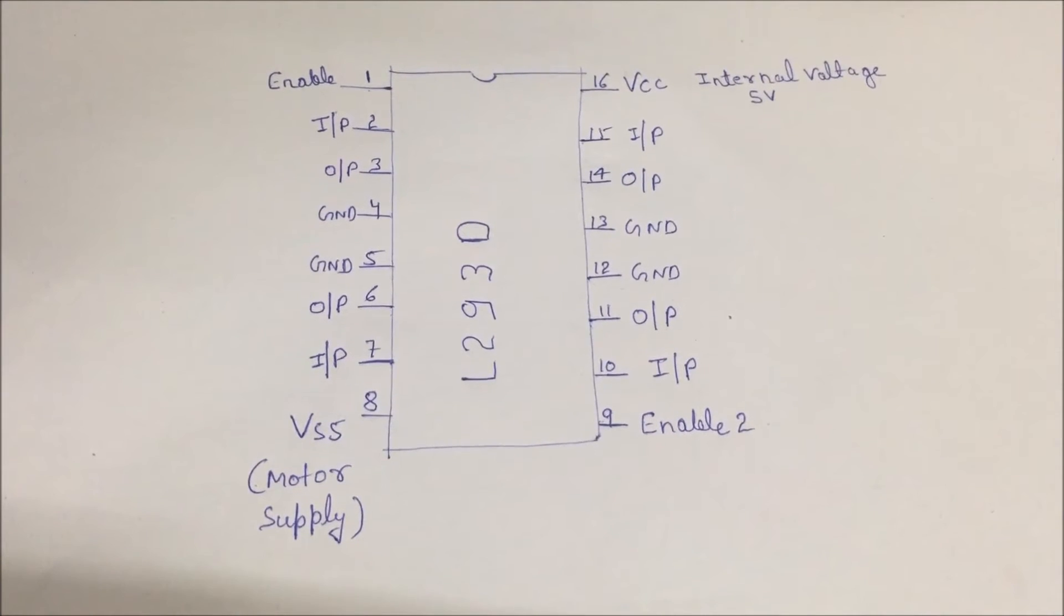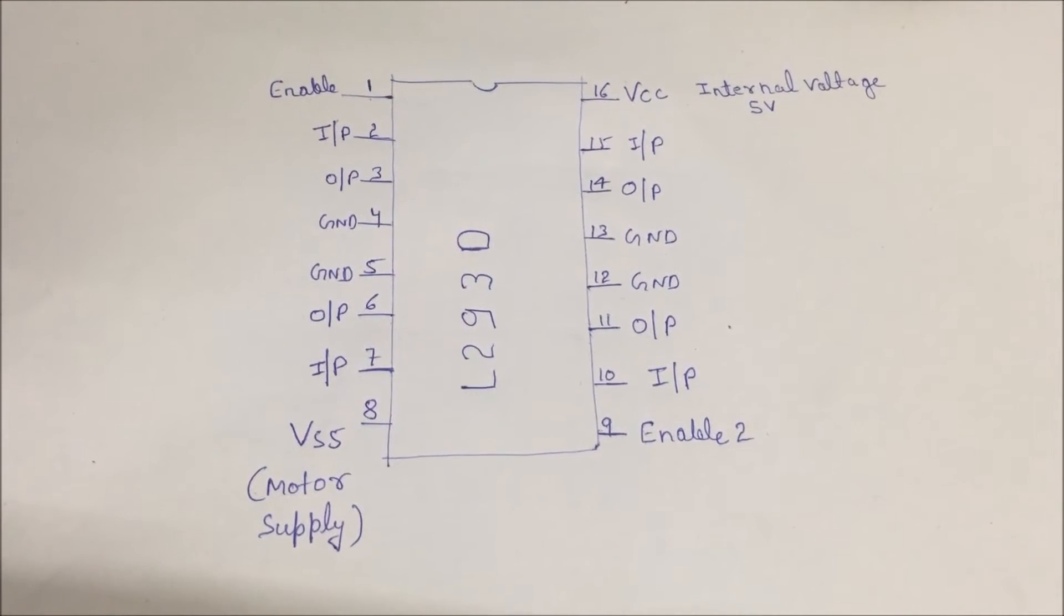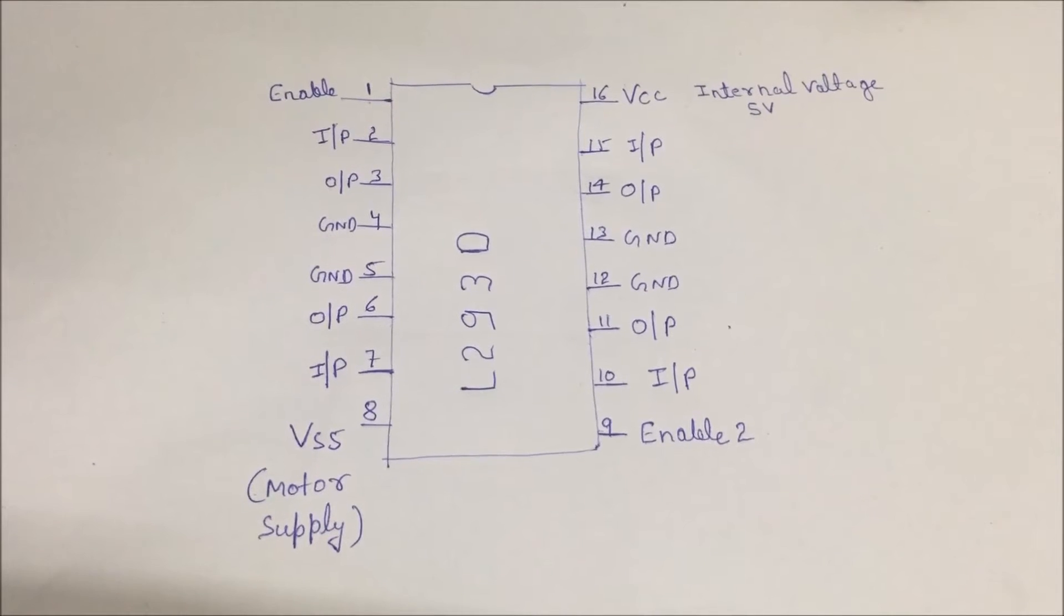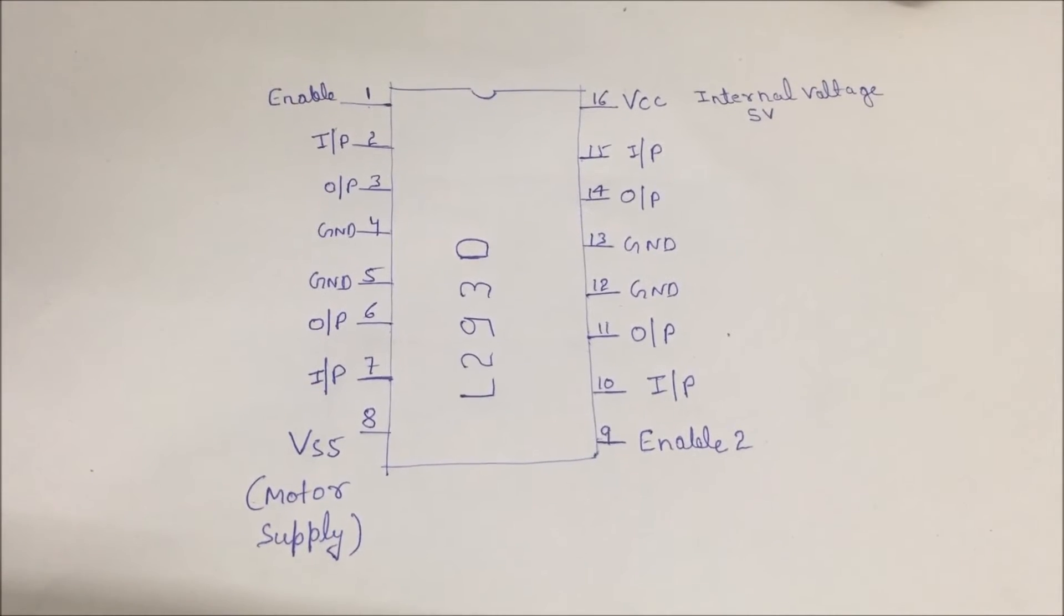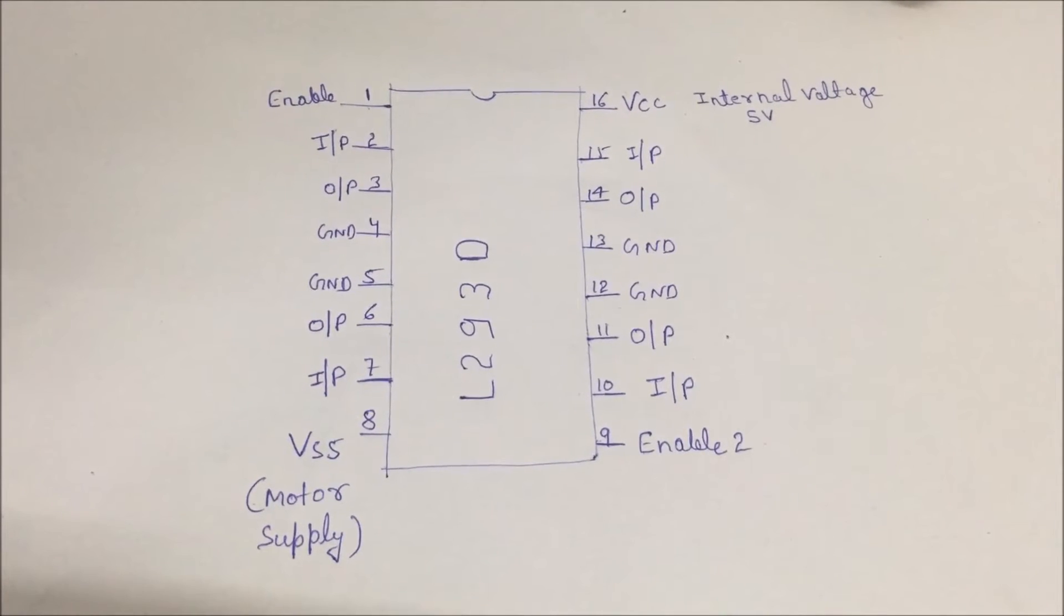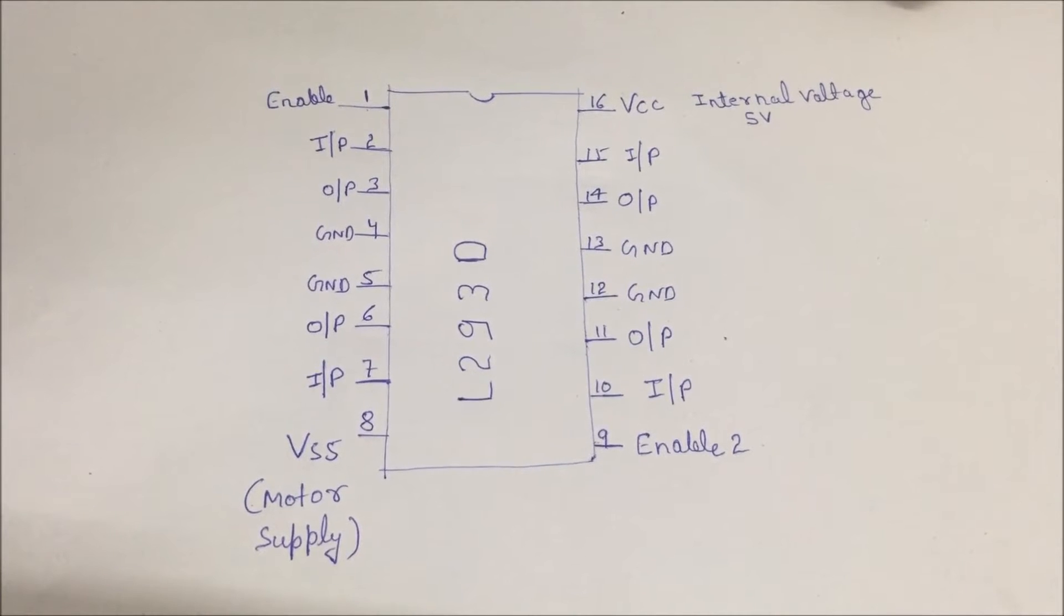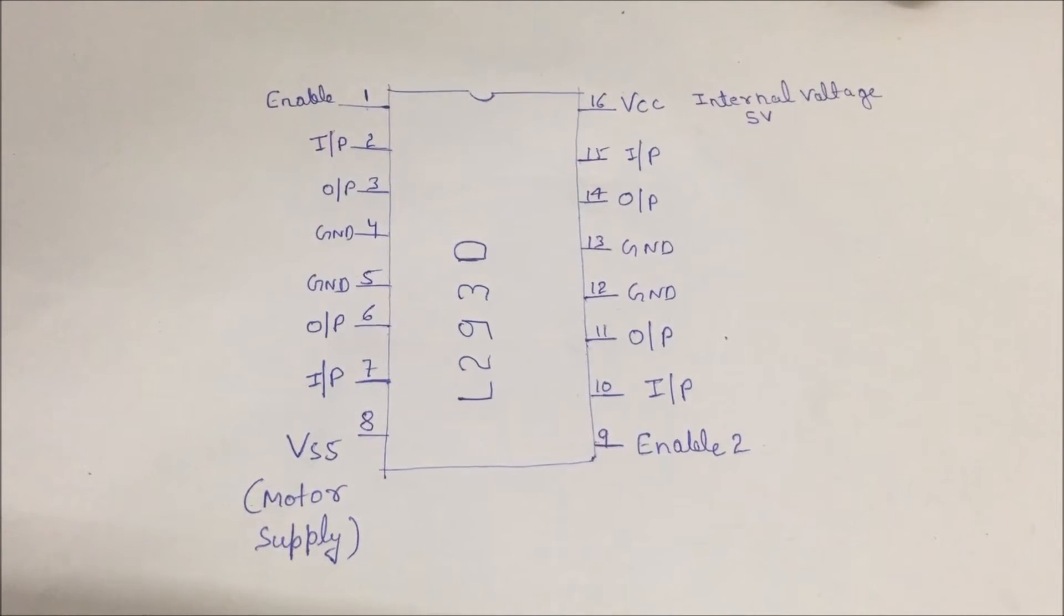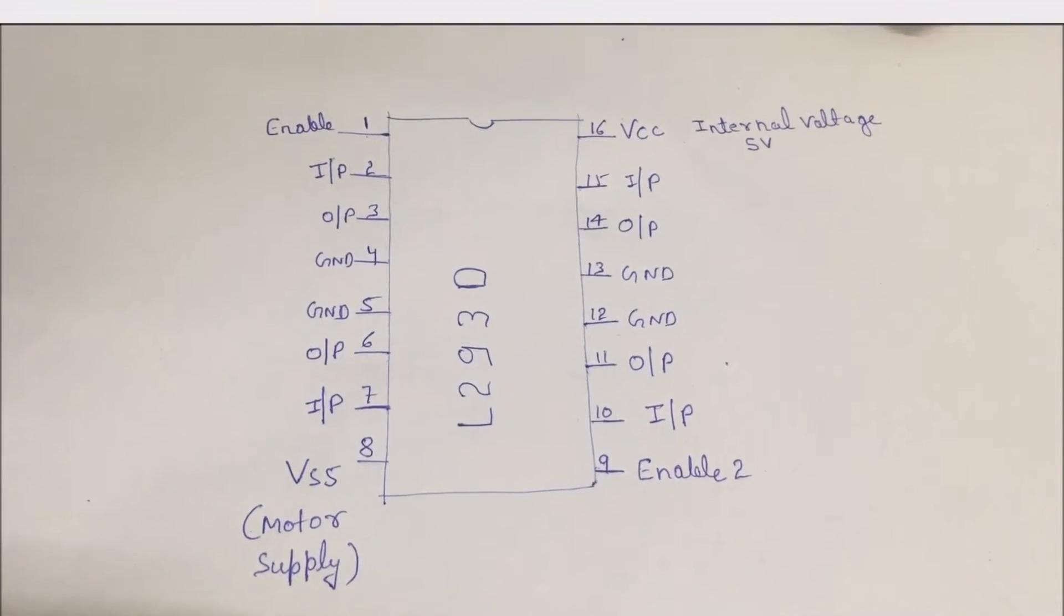Now I am going to tell you about L293D. It has 16 pins. It consists of 2 H-Bridges which control a set of 2 DC motors simultaneously in any direction. H-Bridge is a circuit which allows the current to flow in either direction.